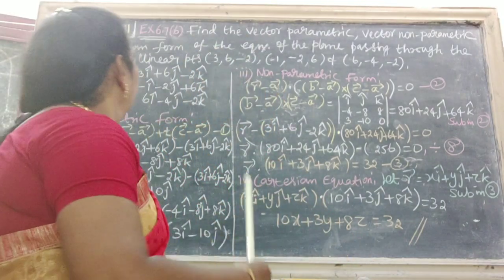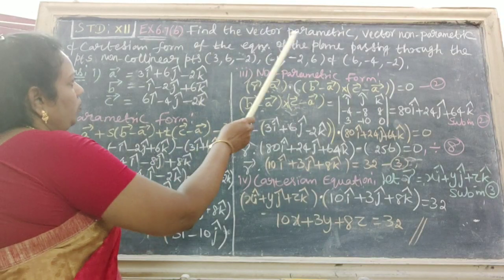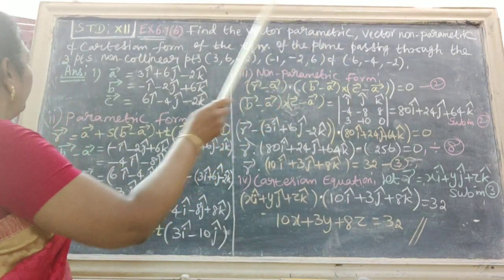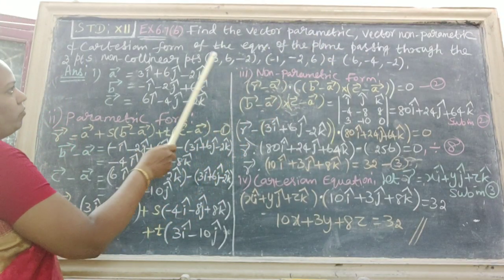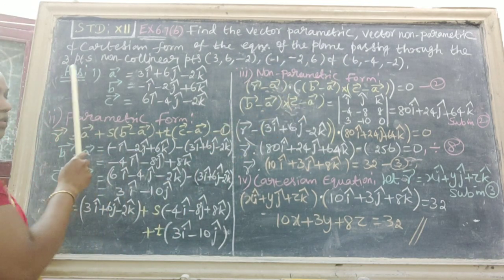Next sum. Exercise 6.7, sixth sum. Find the vector parametric form, vector non-parametric form and the Cartesian form of the equation of the plane passing through the three points.